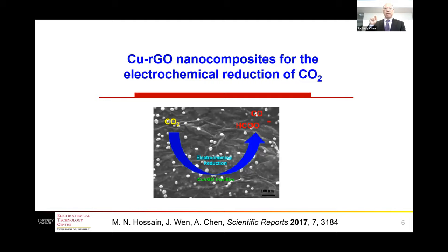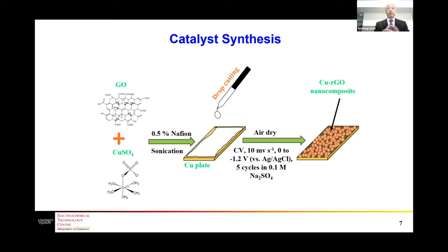The first example I will show is to fabricate copper–reduced graphene oxide nanocomposites for the electrochemical reduction of carbon dioxide. This scheme shows how to fabricate the nanocomposites. We start from graphene oxide and copper sulfate as precursor, mix the solution, then use drop casting on the copper plate. After drying, we use an electrochemical method to simultaneously reduce the copper precursor and graphene oxide to form copper nanoparticles and reduced graphene oxide.